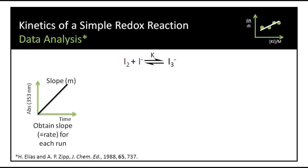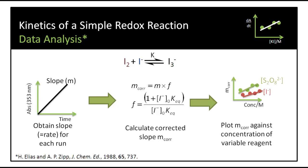The actual rate of reaction will depend on the concentration of triiodide at any particular point. Therefore, we take the slopes of the reaction, which are the rates for each individual run, and we multiply these by a correction factor. This correction factor is based on the equilibrium constant, which is 698 for this reaction. We use the original concentration of iodide, and we work out our correction factor.